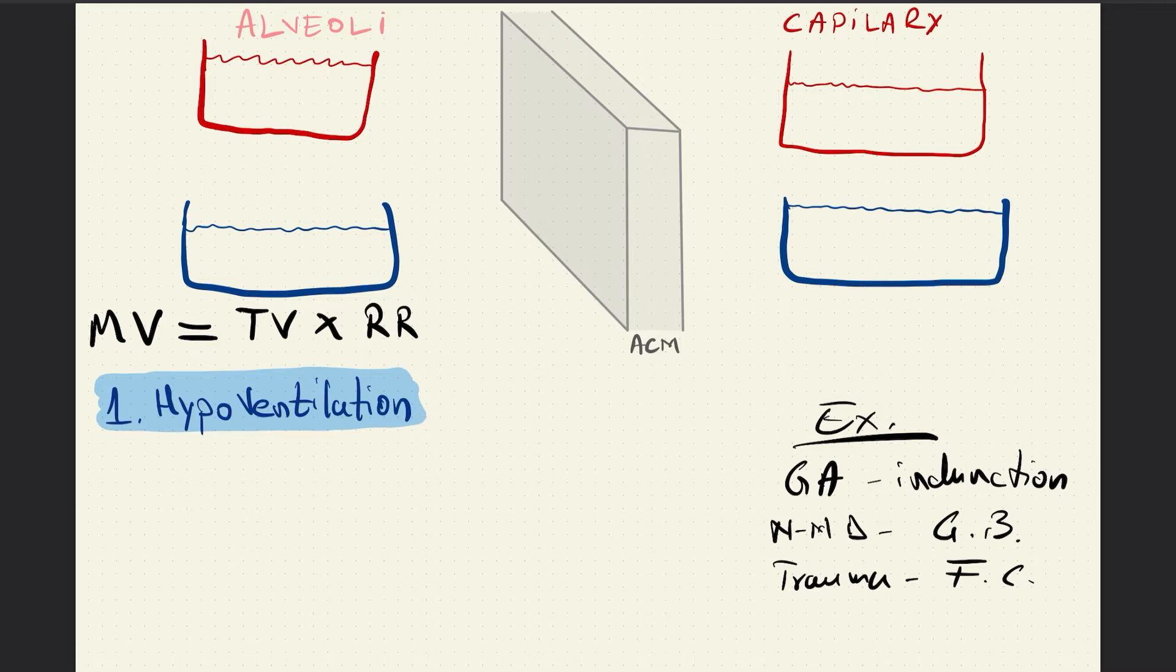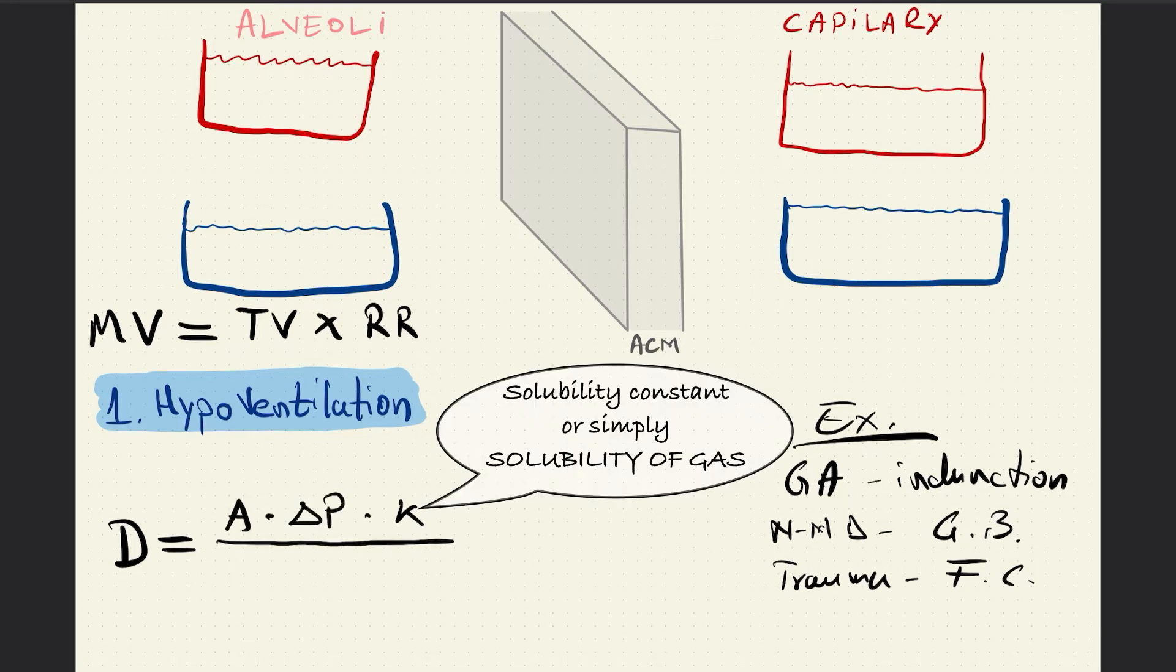To better understand how hypoxemia occurs in hypoventilation, we need to add on the transfer of gas equation which is Fick's equation, Fick's law, which is diffusion is proportional to the surface area, the pressure gradient of a gas, the constant, and is inversely proportional to the thickness of the alveolo-capillary membrane.